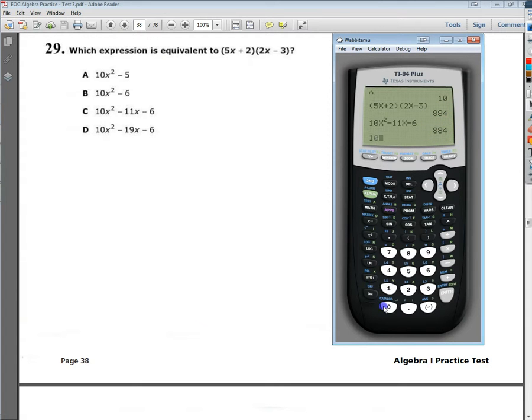I'll show you that it doesn't work for D, just in case you've never seen this before. Like I said, it's kind of a terrible thing to know, but you've got to do what you've got to do. 804 and 884 are not the same thing. So D is not the correct answer.